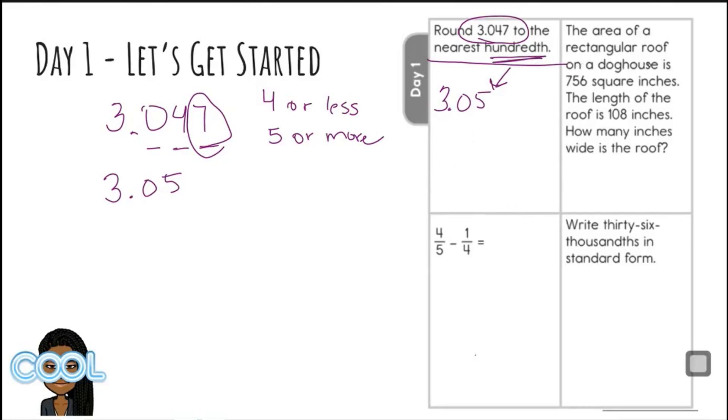It says the area of a rectangular roof on a dog house is 756 square inches. The length of the roof is 108 inches. How many inches wide is the roof? If you remember that the area, the formula to find the area is area equals length times width. Because they are providing us with the area of 756 and the length of 108, we are missing that width. So in order to solve for W, we have to basically conduct an inverse operation, which means we're going to have to divide. So that's going to be dividing 108 from both sides of that equal sign.